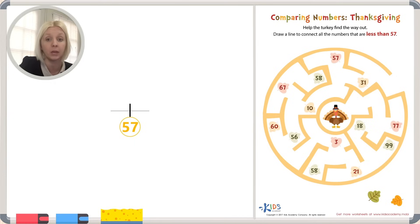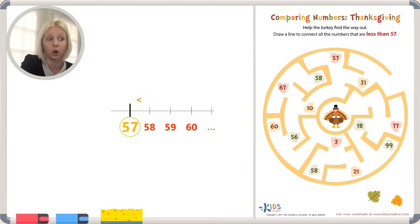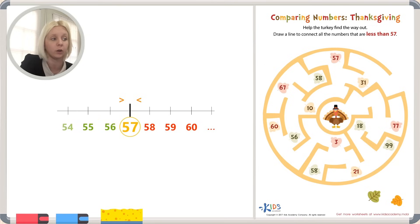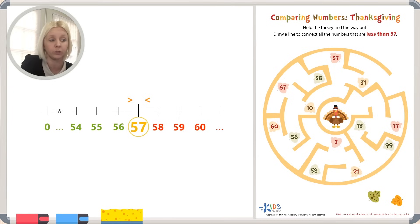What would be a number greater than 57? That would be 58, 59, 60 — those would all be examples of numbers that are greater than. But we're looking for numbers that are less than. So we need any number below 57, like for example 56, 55, 54, 53, and all the way down to zero. We're looking for all the numbers on this side of the number line that are less than 57.